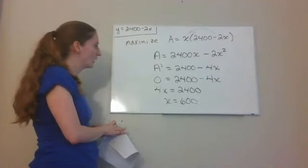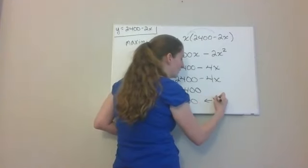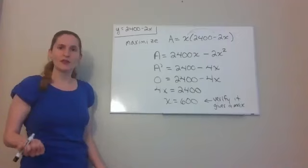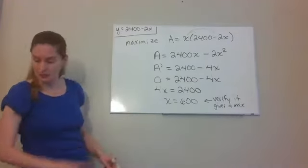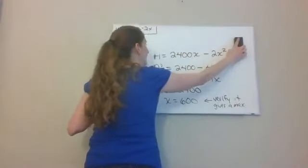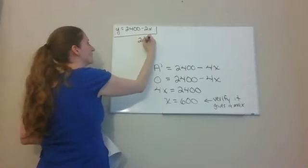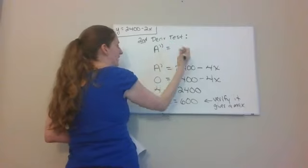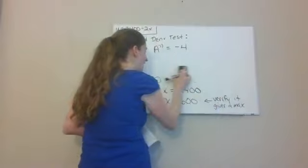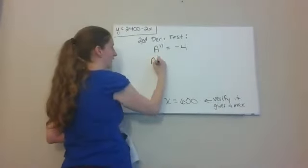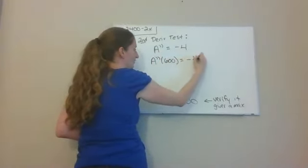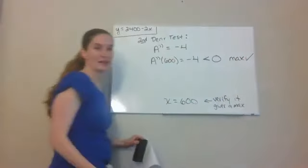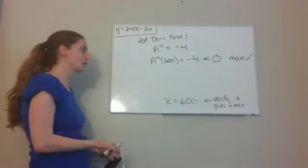I'll use the second derivative test. Taking the second derivative of area gives negative 4. Plugging in my critical value x equals 600, I still get negative 4, which is less than zero. The second derivative test tells me that when the second derivative is negative, I have a maximum. So x equals 600 does indeed give me a maximum area.